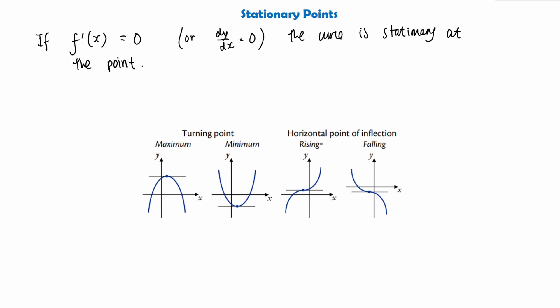Then we have horizontal points of inflection. If we have a curve that looks something like this, we have the stationary point here, and it's called the point of inflection because when it gets to this point the curve reflects or inflects and changes direction. This stationary point here is going to have gradient 0, and then we have a falling one as well.